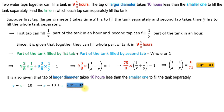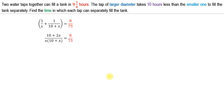Substituting the value of Y from equation two into equation one, we get 1/X + 1/(X + 10) = 8/75. Simplifying the left side gives (10 + 2X) / [X(X + 10)] = 8/75. Since 2 is a common factor in the numerator, we cancel it to get (5 + X) / (X² + 10X) = 4/75.